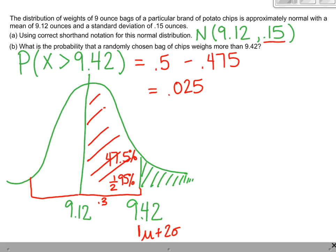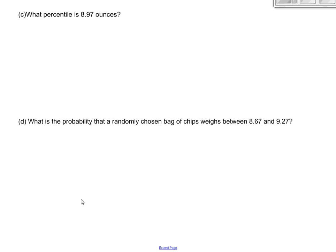And if all that was clear, great. If it wasn't, you may need to rewind and listen to it again to get the logic of where the 2.5% came from. Okay, so next question.